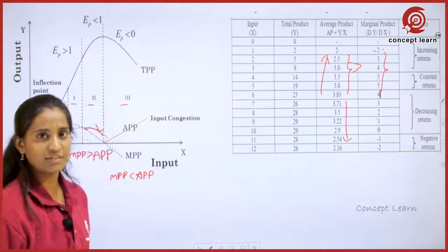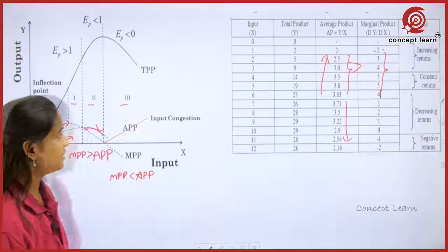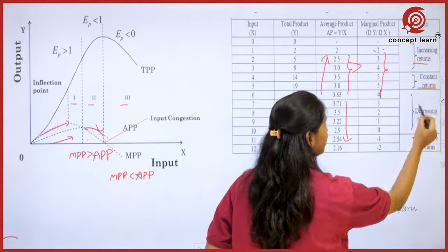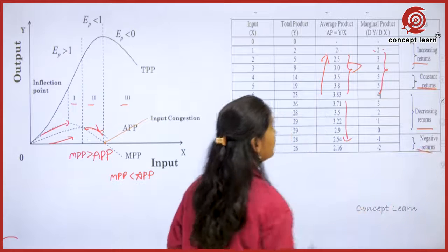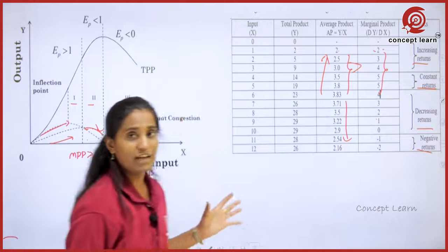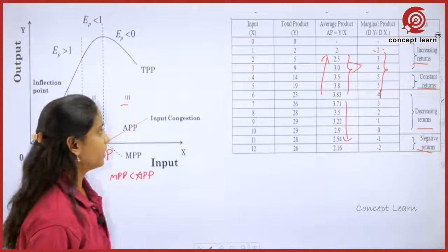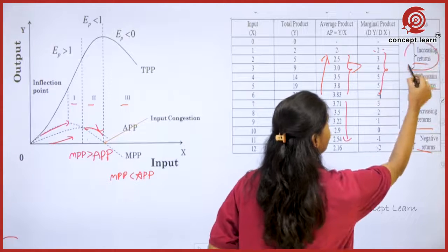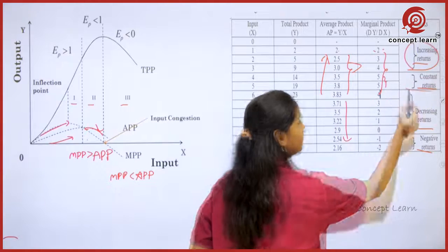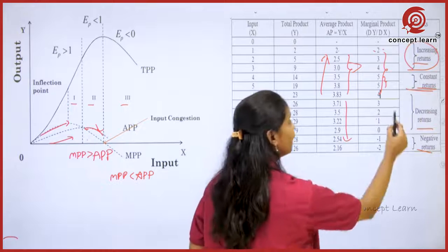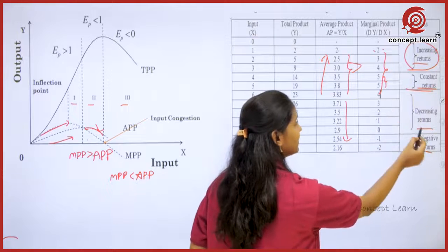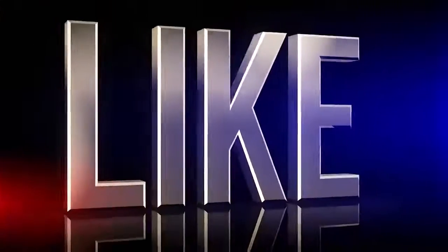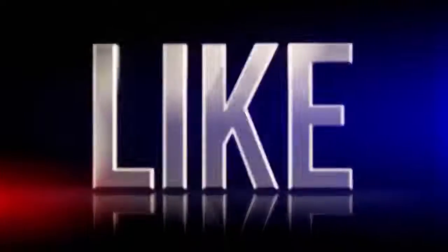Different stages of the production function will be understood in later slides. These are the important points: when MPP is increasing, these are increasing returns; when MPP is constant, we find constant returns; when MPP is decreasing, we find decreasing returns; and correspondingly there are negative returns as well.